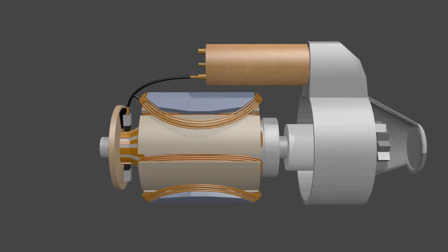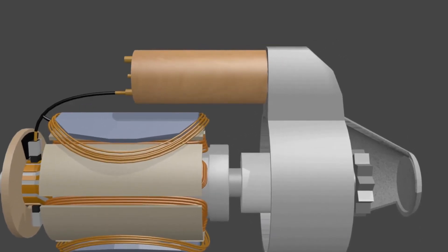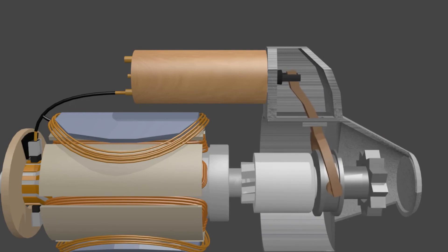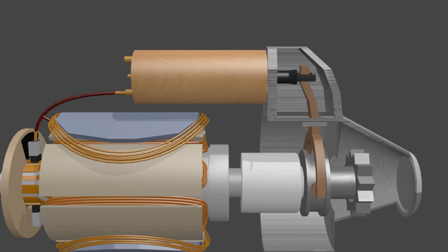Next, we will discuss the solenoid starter. This component serves to drive the starter gear to connect with the flywheel, and to connect the current from the battery to the electric motor.